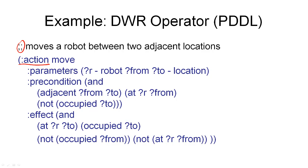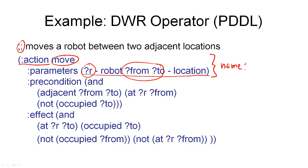In PDDL, this action has the unique name move used to identify it. It has several parameters: one variable ?R of type robot, and two more variables both of type location. This corresponds to what we called the name of the operator in the STRIPS definition. The preconditions are introduced by the preconditions symbol and are explicitly stated as a conjunction using the and symbol — meaning all must hold. The first precondition is that the two locations must be adjacent, the robot must be at the first location it is starting from, and that destination location must not be occupied.